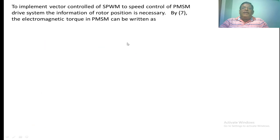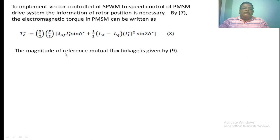To implement vector control of PMSM drive, rotor position information is necessary. Electromagnetic torque of PMSM can be written as T star equal to 3 by 2 into P by 2 into lambda AF IS star sine delta star plus 1 by 2 LD minus LQ IS star square into sine 2 delta. The magnitude of reference flux linkage is given by equation 9: lambda M star equal to square root of lambda AF plus LD is star cos delta star squared plus LQ is star sin delta star squared.